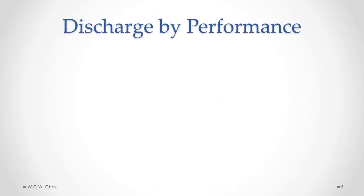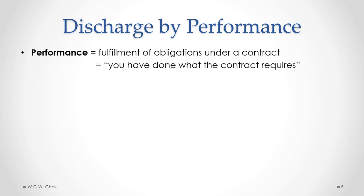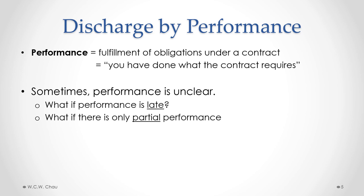The first type of discharge we'll look at is discharge by performance. That means you actually do what you are required to do under the contract. Once you've done your contractual obligations, you are discharged from the contract and don't have to do anything more. However, issues can arise where it's unclear whether someone has actually performed, such as where performance is done late or where there's only partial performance — not 100% of what is in the contract.